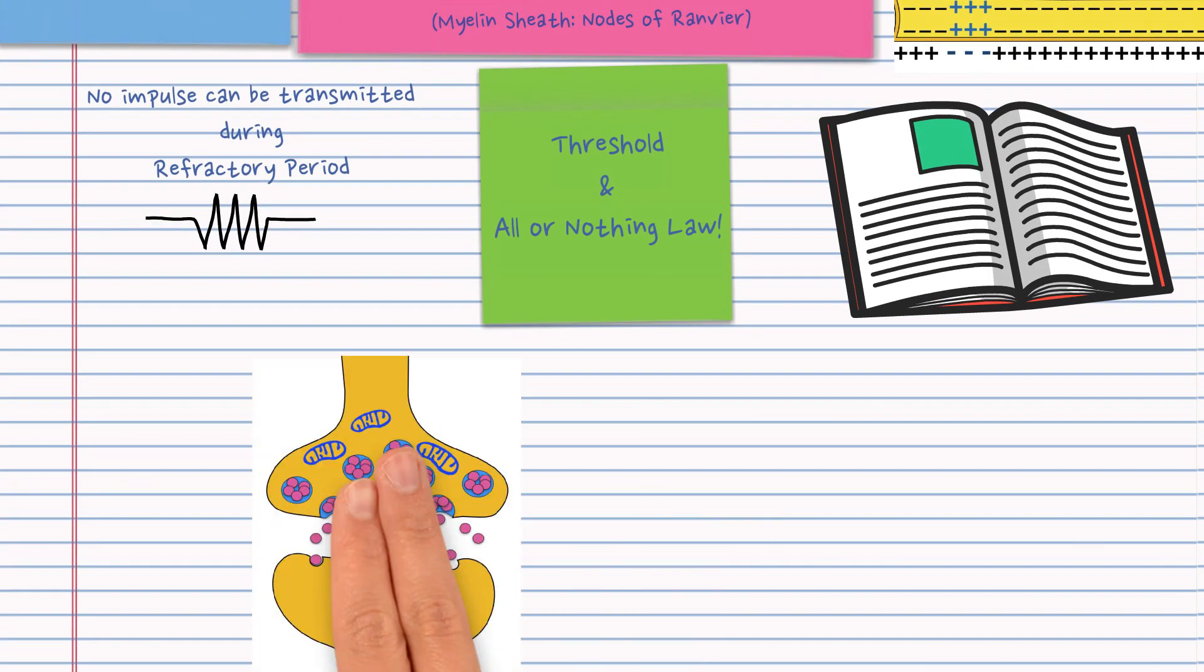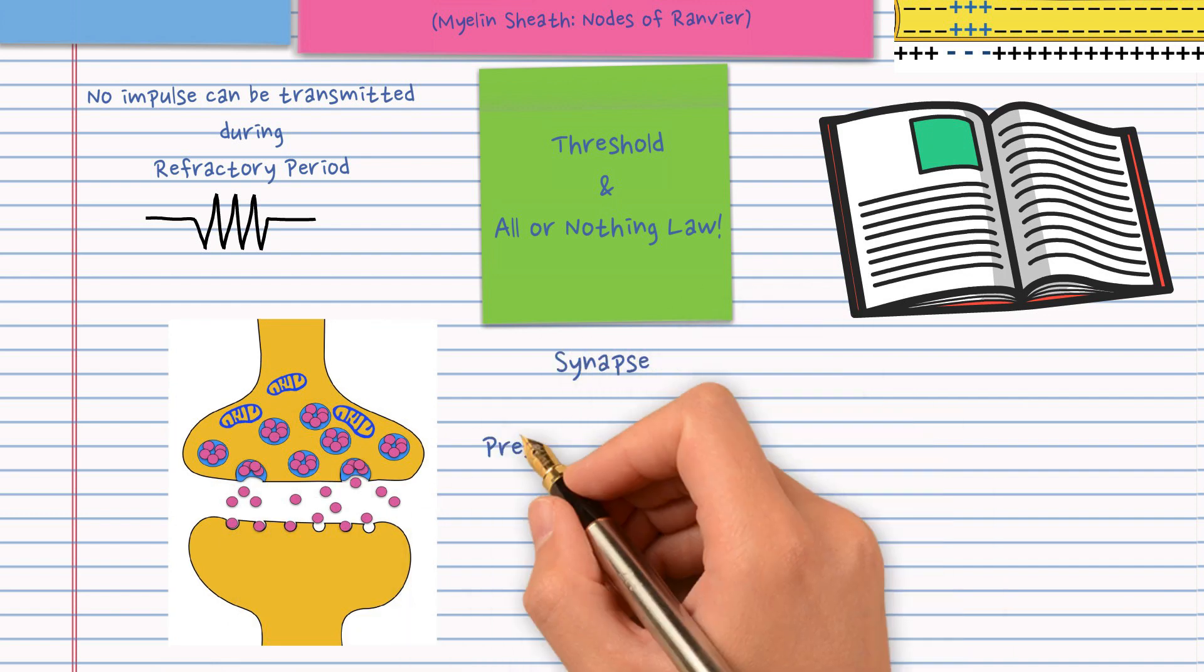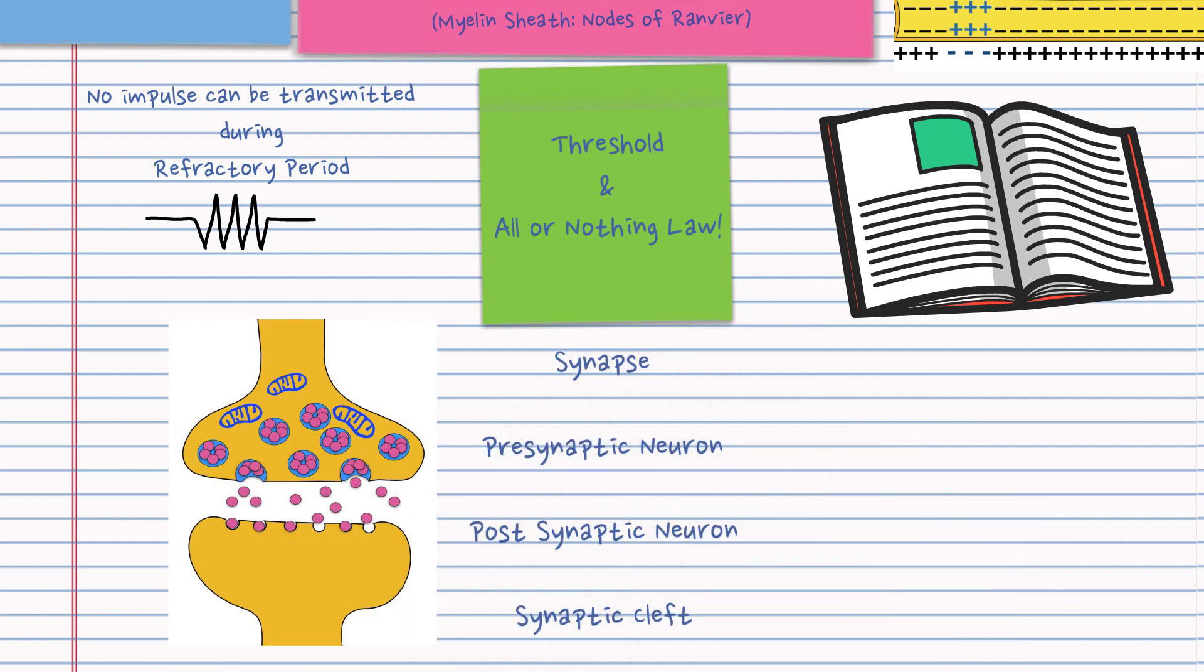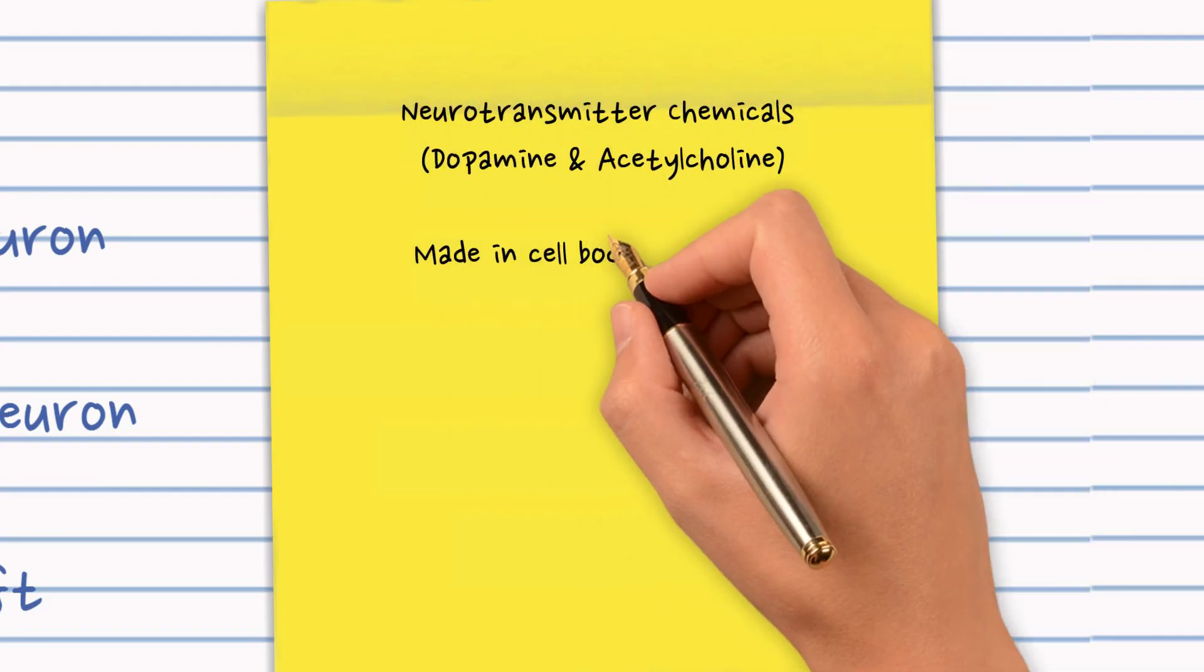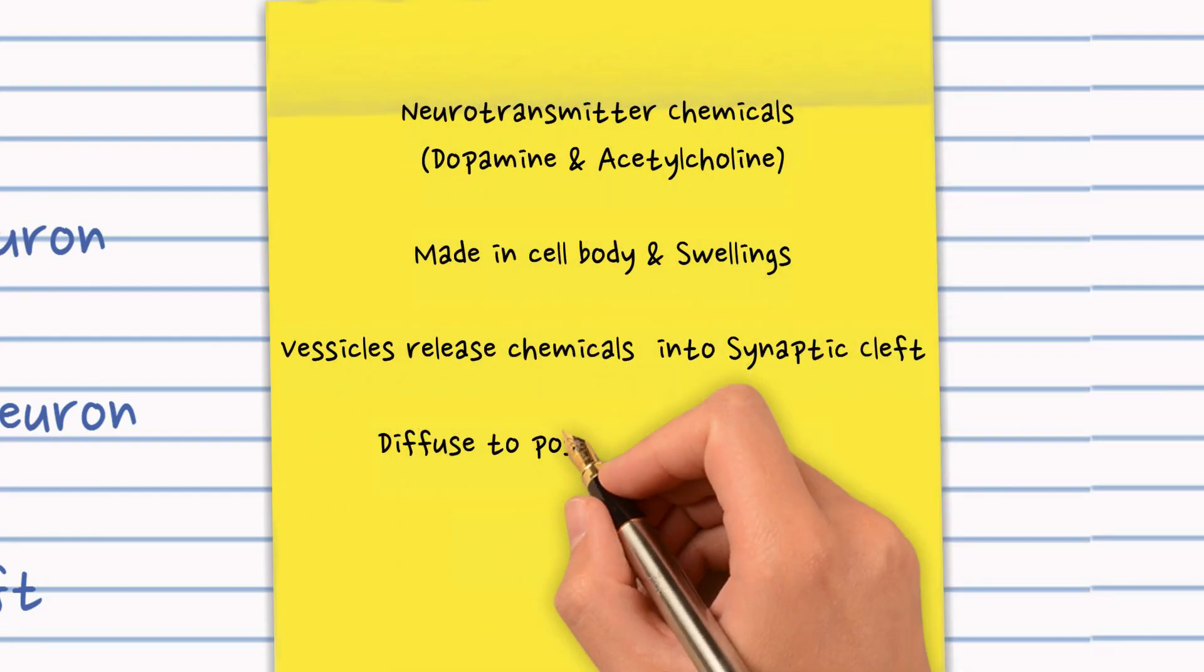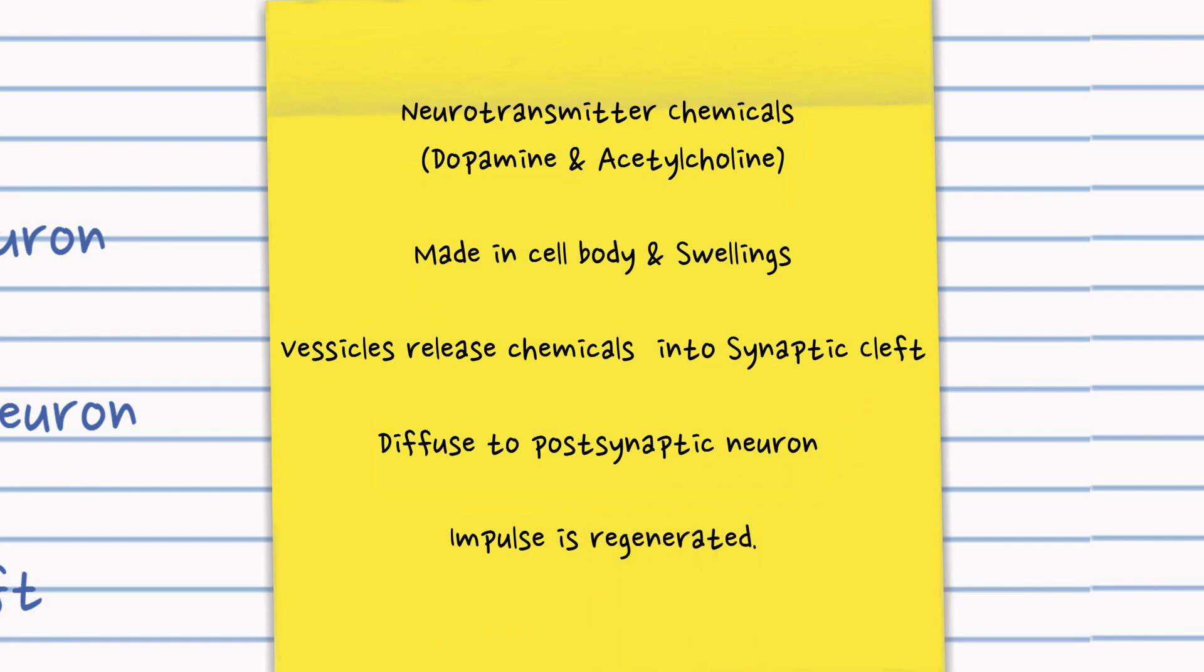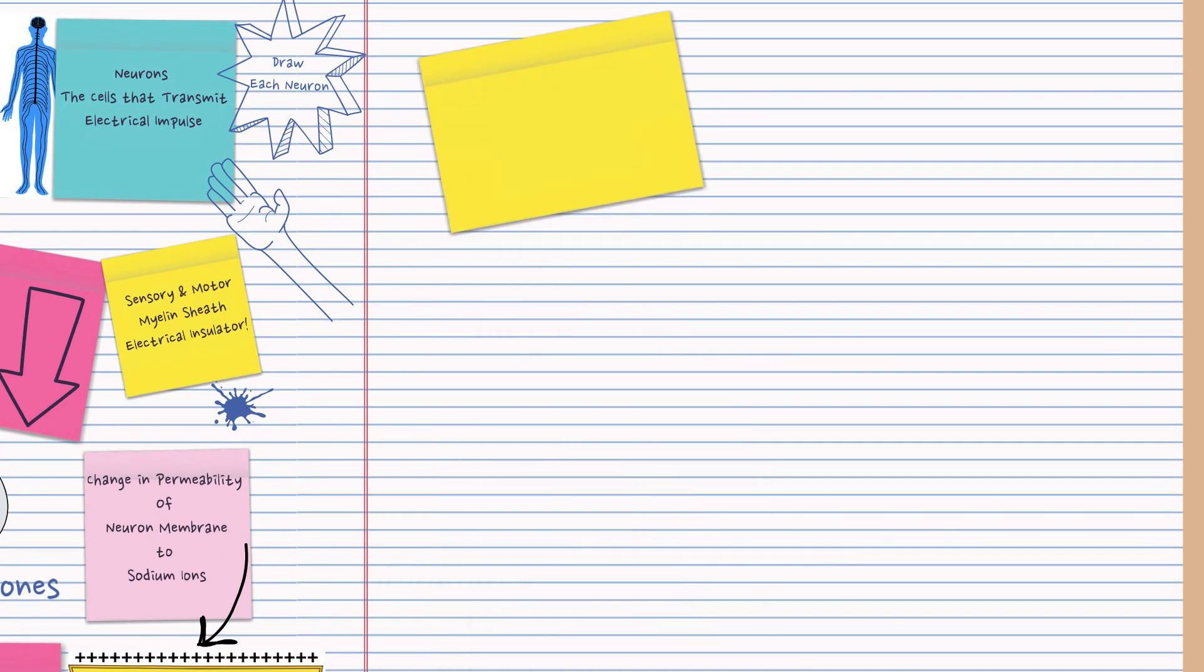Make sure you know what the synapse is, the pre-synaptic neuron, the post-synaptic neuron and the synaptic cleft. Be able to discuss how the neurotransmitter chemicals result in the regeneration of the impulse. Not only should you be able to draw and label a synapse and discuss what happens but you should know why they're important.